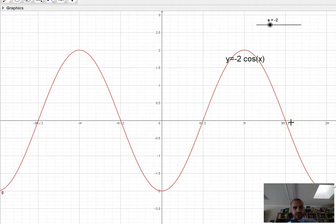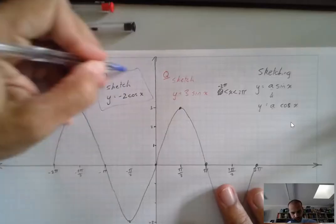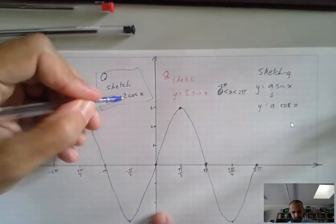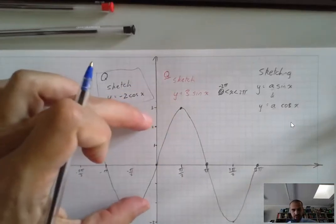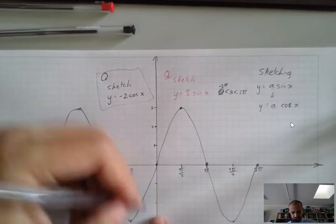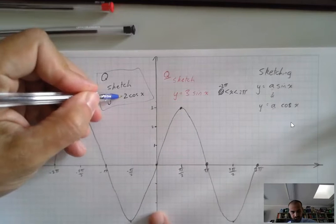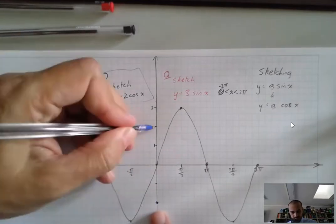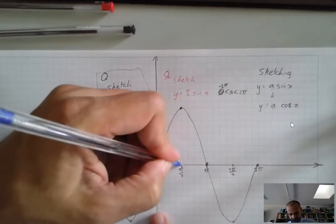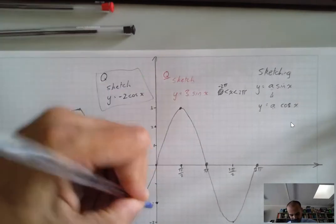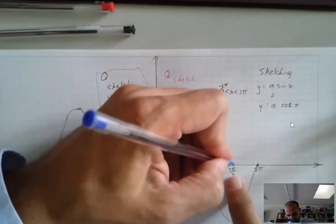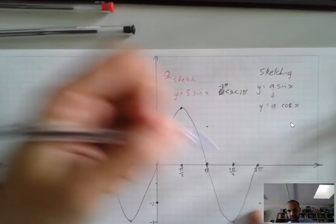Let's sketch that by hand. The question is: sketch y equals negative 2 cos x. The negative 2 is the amplitude — how far from the middle to the top and from the middle to the bottom. Because it's negative, the cosine curve is going to start at the bottom. If it were positive, it would start at the top, but the cosine curve doesn't start in the middle. So it starts at negative 2, moves into the centre, goes up to positive 2, comes back to the centre, moves down, and back to where it started at negative 2.